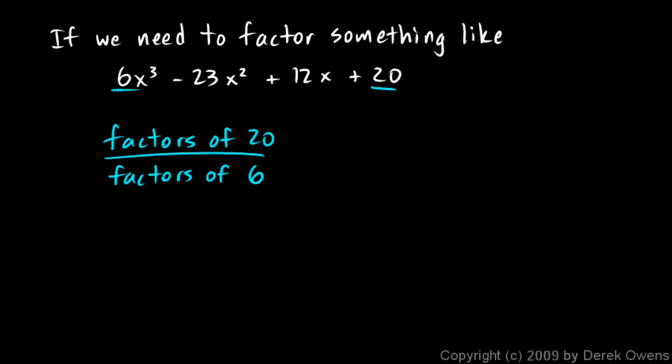And that is the rational zeros theorem. The rational zeros theorem says that if this polynomial has any factors at all that are rational numbers, they will be in the list of numbers created by doing this, taking factors of the constant term and dividing by factors of the lead coefficient.